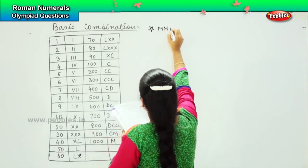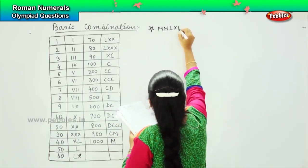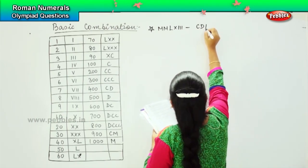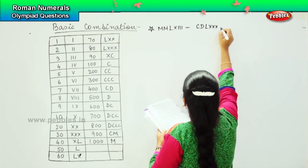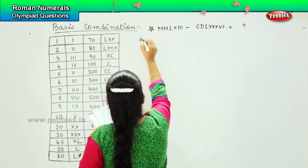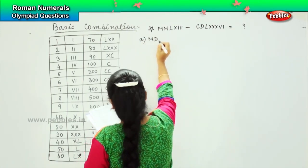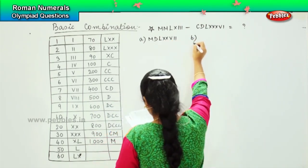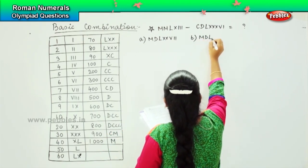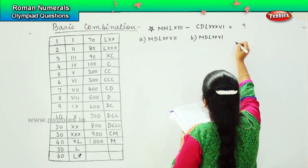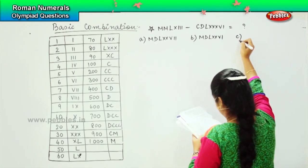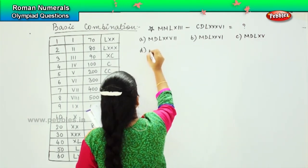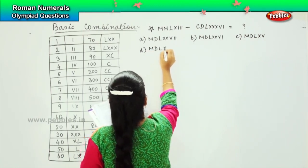The first question is: double M, LX, triple I minus CD, L triple X, VI equals to something. And your options are: option A, MD L double X VI; option B, MD L double X VI; option C, MD LXV; and option D, MD LX VI triple I triple I.